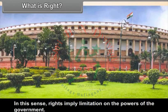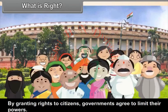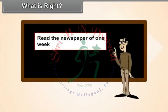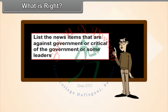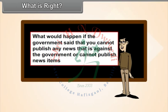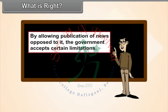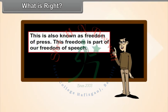Rights imply limitations on the powers of the government. By granting rights to citizens, governments agree to limit their powers. By allowing publication of news opposed to it, the government accepts certain limitations. This is also known as freedom of the press, which is part of freedom of speech.